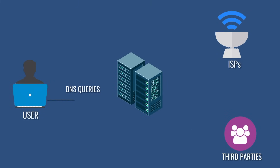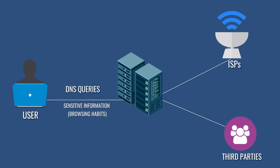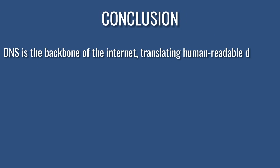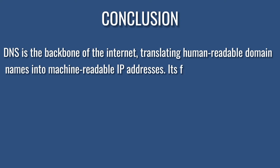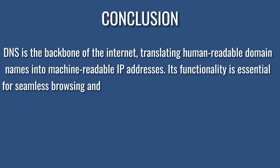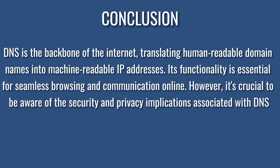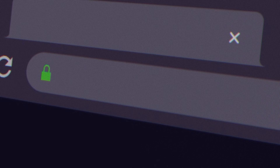DNS queries can reveal sensitive information about your browsing habits, and some ISPs and third parties may log this data for various purposes. That's why many people opt to use encrypted DNS services like DNS over HTTPS (DoH) or DNS over TLS (DoT) to protect their privacy. In conclusion, DNS is the backbone of the internet, translating human-readable domain names into machine-readable IP addresses. Its functionality is essential for seamless browsing and communication online, but it's crucial to be aware of the security and privacy implications and take necessary precautions to safeguard your online activities.